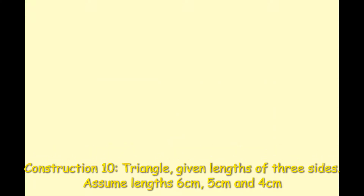In this video we're looking at construction 10, which is asking us to construct an accurate drawing of a triangle ABC with three given sides. In your exam question they'll give you the lengths of the three sides. In this video I'm going to work with six centimetres, five centimetres and four centimetres. We're going to use our compass, ruler and pencil to construct that triangle.